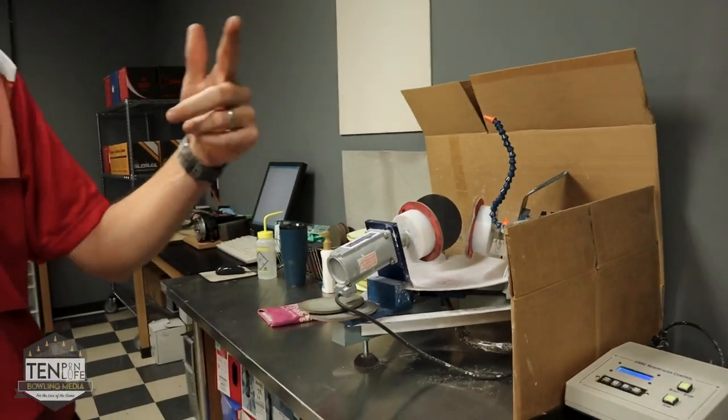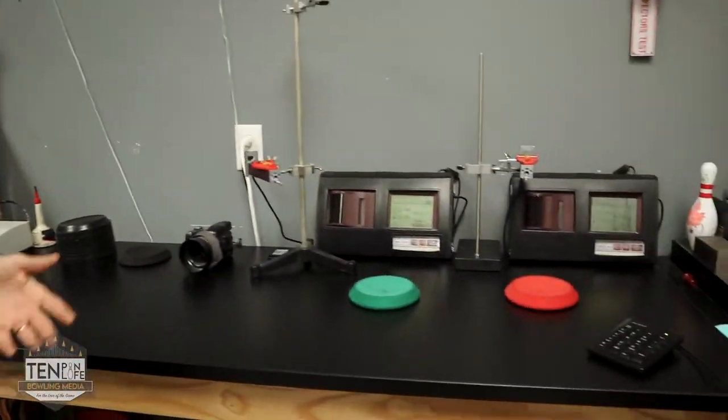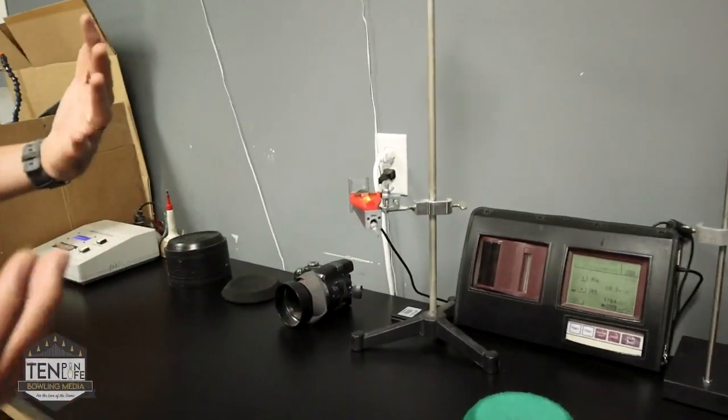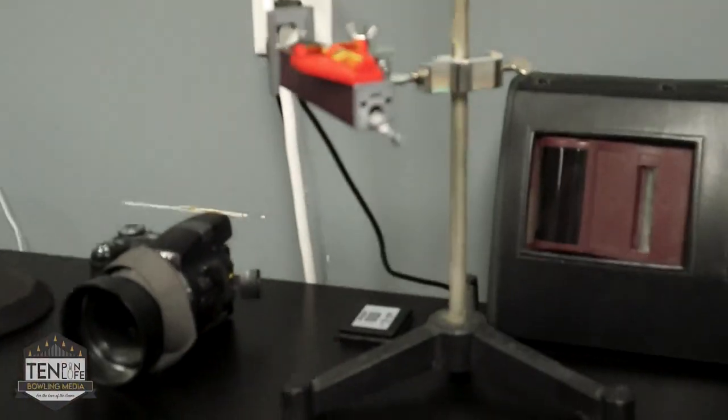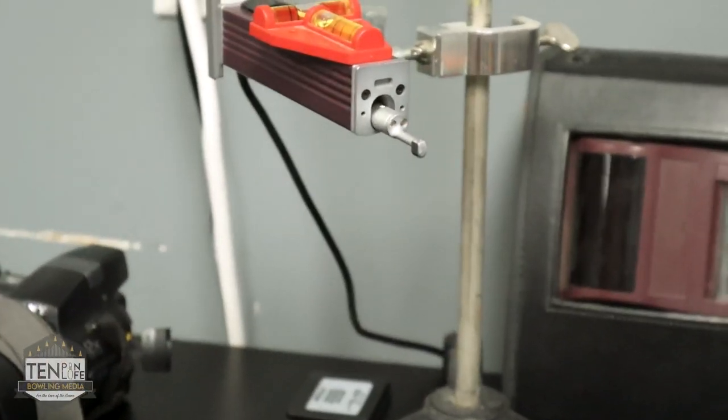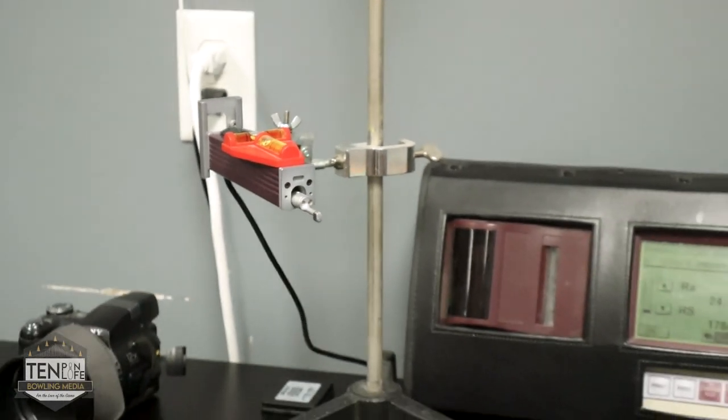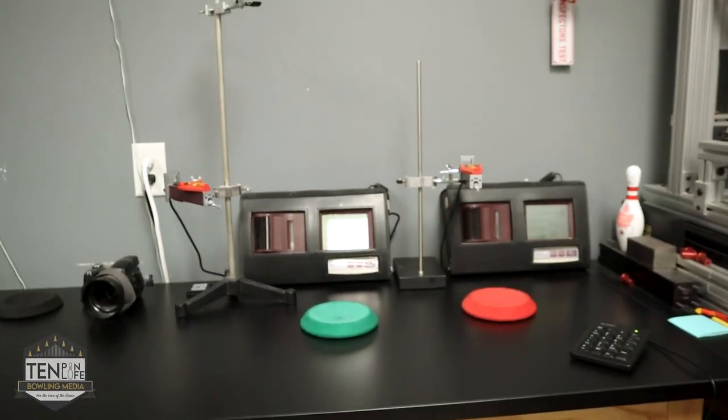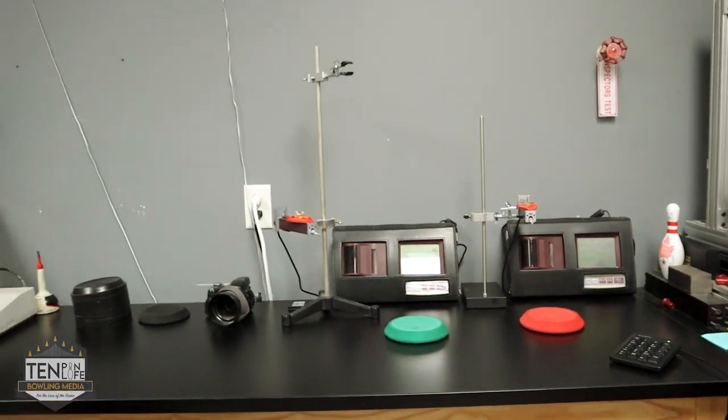They would go through the sanding process then come here to our profilometers. These are basically like a super large record player needle. They stroke across the surface and detect the microscopic differences in the peaks and valleys and how far apart those peaks and valleys are. We would do 15 spots on the ball and record an average for that.